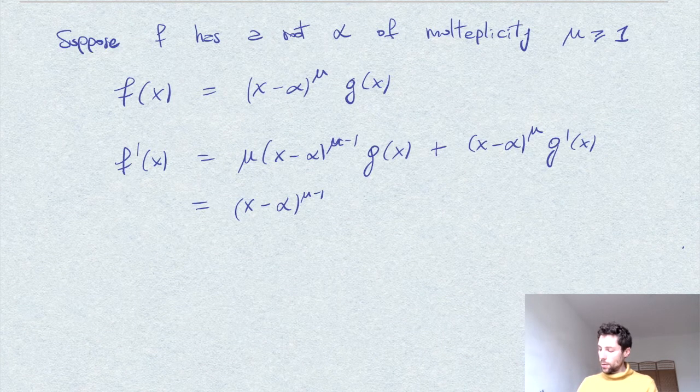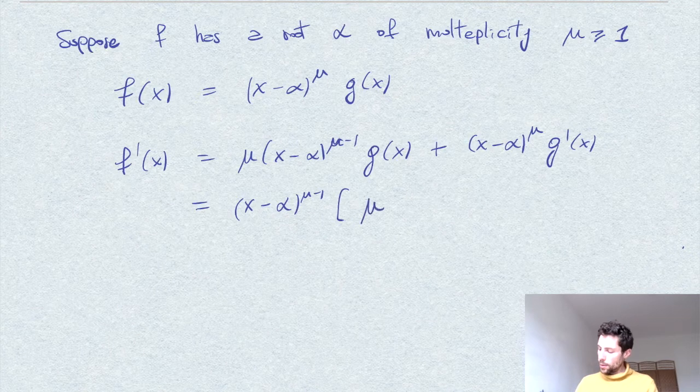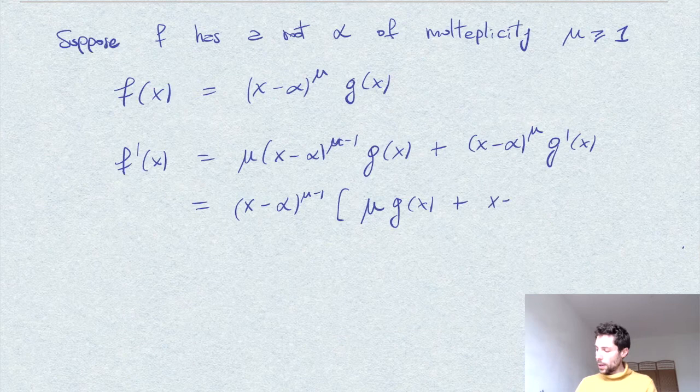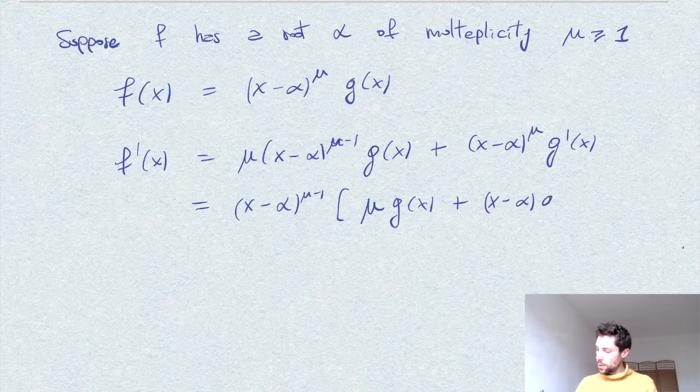And so this I write as mu times g of x plus x minus alpha times g prime.